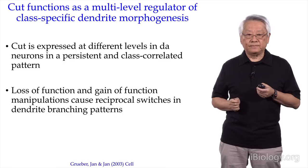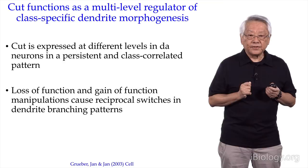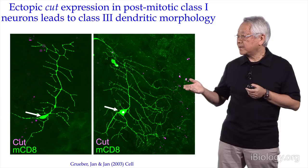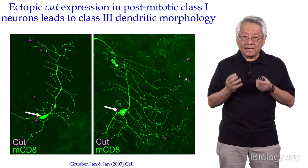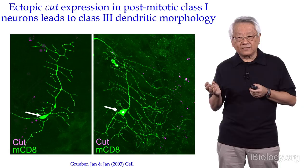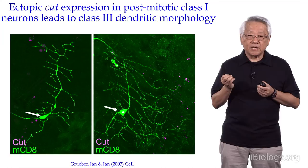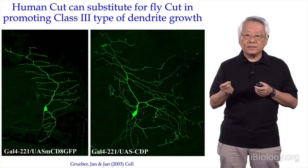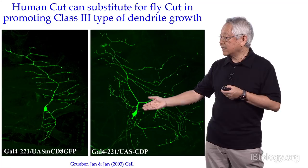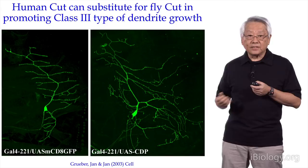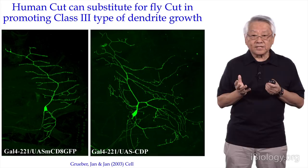Is CUT function evolutionarily conserved? There's evidence for that. By ectopically expressing CUT in a class 1 neuron, you can convert the dendrite into a class 3-specific type. Wes asked: what if instead of the Drosophila CUT, we used the human homolog? When you put the human homolog of CUT into class 1 neurons, it can also convert the class 1 dendrite into a class 3-like dendrite — both in dendrite arbor size and production of dendritic spikes — suggesting that CUT has an evolutionarily conserved function.